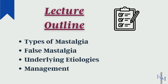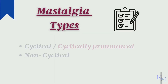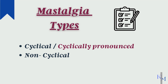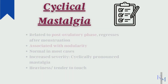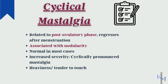Mastalgia is the most common presenting complaint of women coming to breast clinics. It is of two types: cyclical and non-cyclical. Cyclical Mastalgia peaks in the post-ovulatory phase, starting from the 14th day or the day of ovulation, and increases in intensity up to the 28th day or the day of menstruation, and regresses after that.